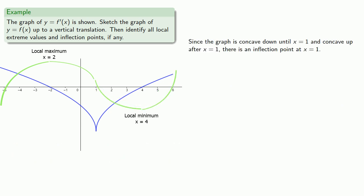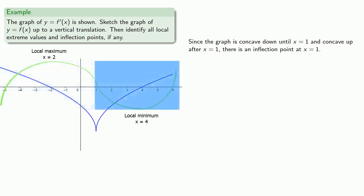Since the graph is concave down until x equals 1 and concave up after x equals 1, that tells us there's an inflection point at x equals 1.